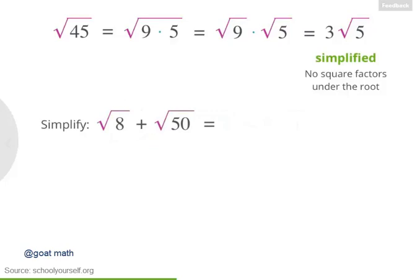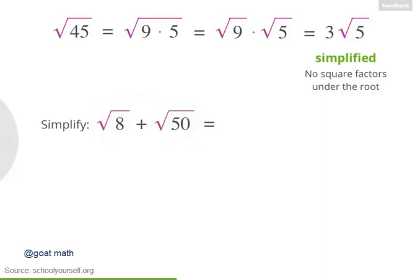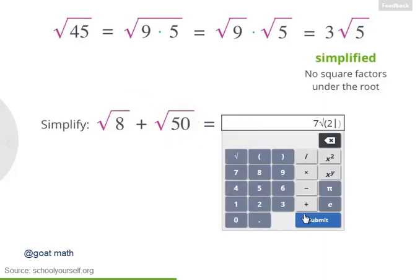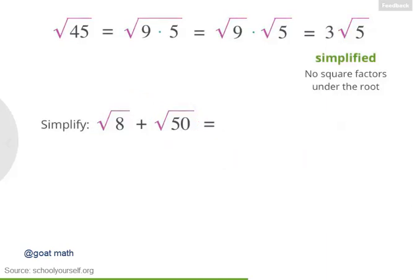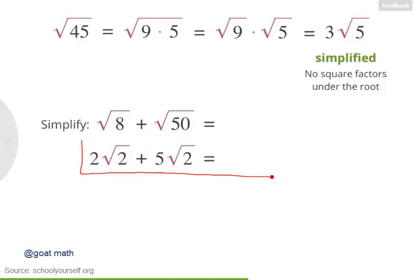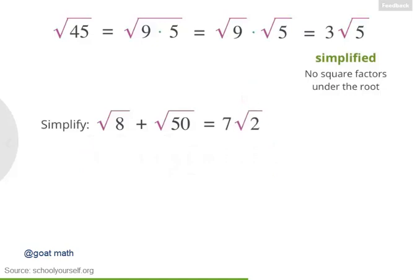Next, try simplifying this sum: the square root of 8 plus the square root of 50. First, simplify each of these roots individually, and then simplify the sum. Excellent work — root 8 equals 2 root 2, and root 50 equals 5 root 2. And 2 root 2 plus 5 root 2 equals 7 root 2. This is the simplified way to write root 8 plus root 50.